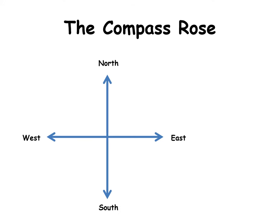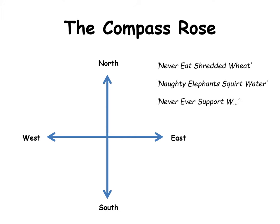The way to remember these four directions is to come up with a four-word phrase that goes clockwise, starting with N, then E, then S, then W. Here are some examples: you could have 'Never Eat Shredded Wheat' for north, east, south, and west. Alternatively, you could have 'Naughty Elephants Squirt Water,' or 'Never Ever Support' your football team beginning with a W, such as West Brom, Wimbledon, or Wolves.